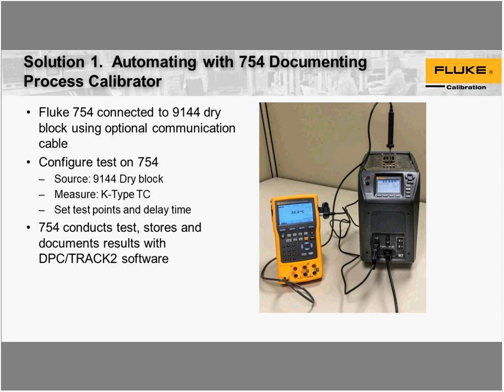The first solution uses the 754 — that's the instrument in the photo with the yellow case — connected to a 9144 drywell. The 754 will configure the test, run the test, and collect results all on its own. When the 754 is done, there's an optional software product called DPC Track 2, which allows you to manage results, store different types of tests, schedule calibrations, and so forth. It's part of a more inclusive package.